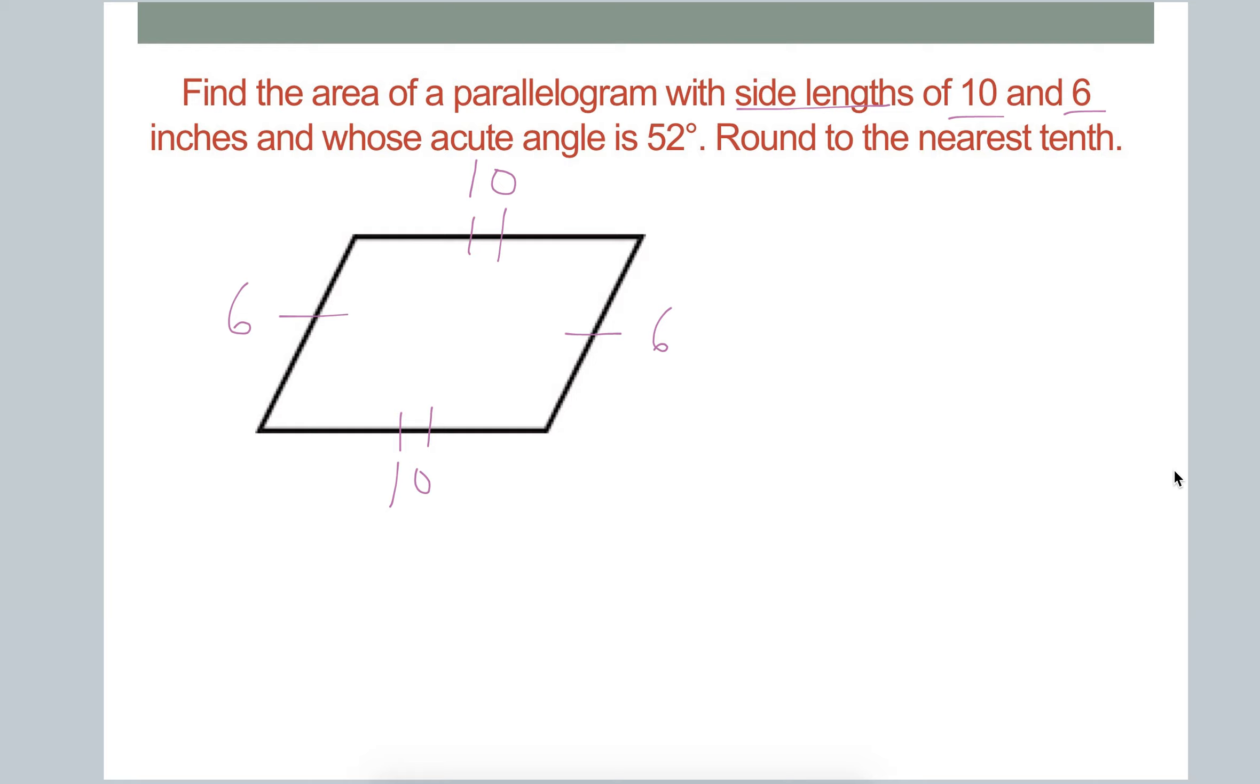Then it says the acute angle is 52 degrees. So while we can't necessarily judge things to size, we can assume in this case that the angles that look acute are the ones that are acute. So if it says the acute angle is 52 degrees, we can assume that this is the angle we're talking about. And we don't necessarily need it, but we also know that the opposite angle here is 52 degrees. That's just one of the properties of a parallelogram that we know that opposite angles are congruent.